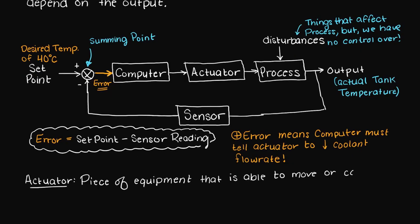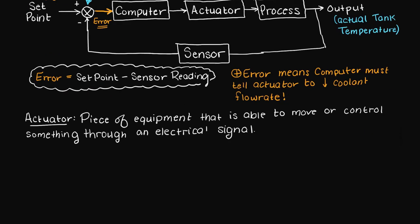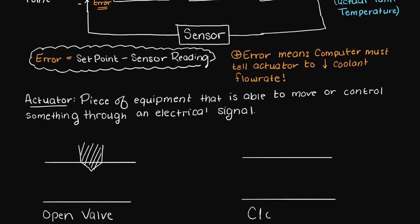Just in case you don't know what an actuator is, it is just a piece of equipment that is able to move or control something through an electric control signal. So think of opening or closing a valve as a simple example.